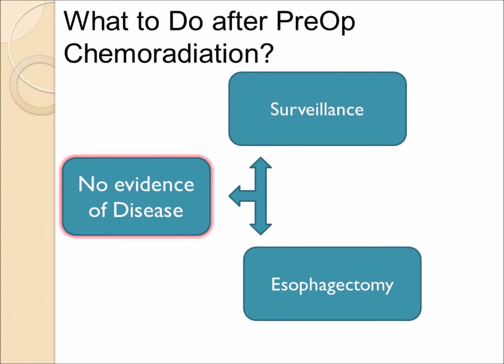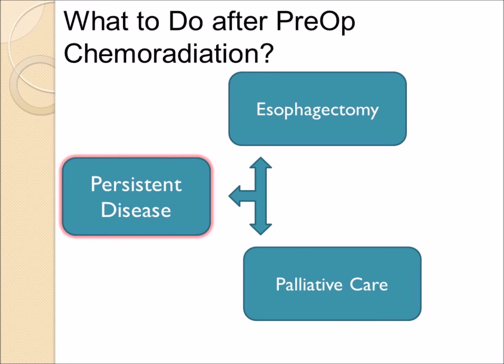So what to do after preoperative chemoradiation? If there is no evidence of disease, some doctors will provide surveillance and watch the patient closely, while many will recommend proceeding with the originally planned esophagectomy — both approaches are reasonable. If there is clearly persistent disease after preoperative chemoradiation, most physicians would proceed with surgery and esophagectomy, unless the patient is in such poor health that only palliative or hospice-type care is appropriate.